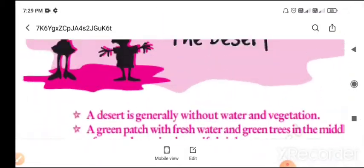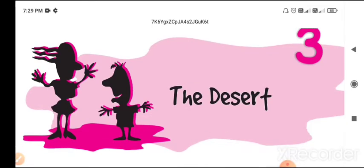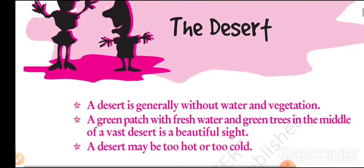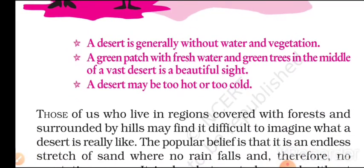Let's check it out — what the lesson is. Lesson number three: The Desert. A desert is generally without water and vegetation. A green patch with fresh water and green trees in the middle of a vast desert is a beautiful sight. Can you give it a name? We just discussed it. A desert may be too hot or too cold.